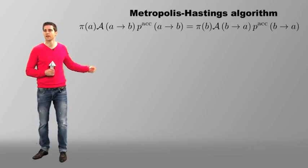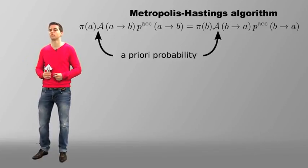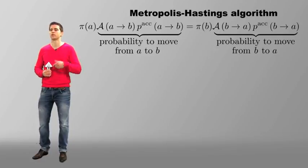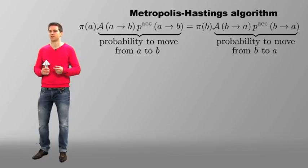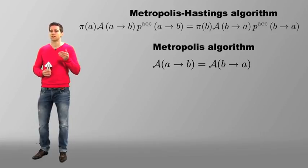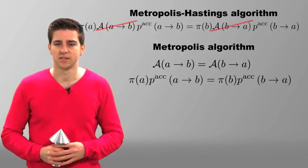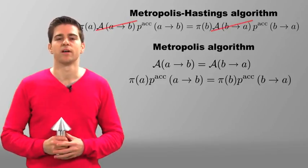A of A to B corresponds to the a priori choice of proposing a move from A to B, which together with the acceptance probability P accept gives the probability to move from A to B. In this general detailed balance condition, the Metropolis strategy corresponds to the symmetric choice A of A to B equals A of B to A, so that these a priori probabilities drop out of the picture, and this is exactly the reason why we never spoke about them until this week.